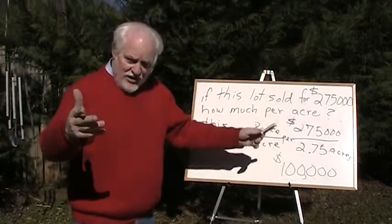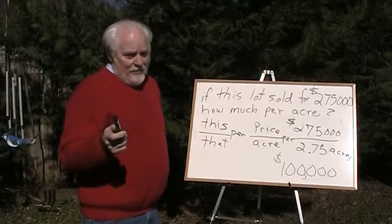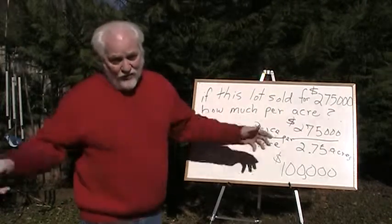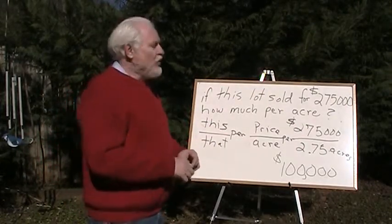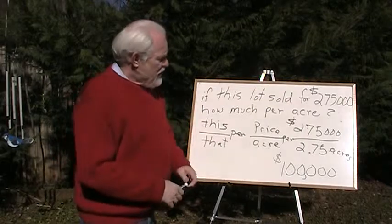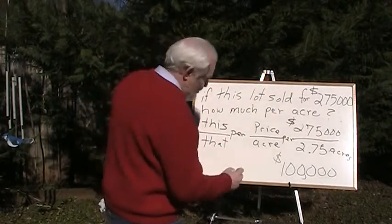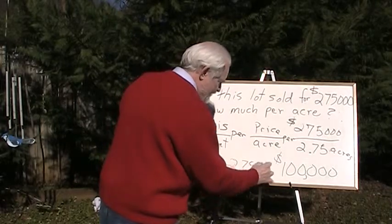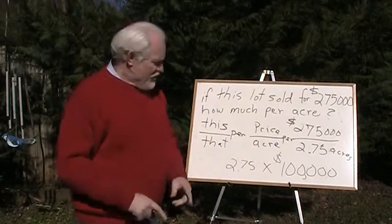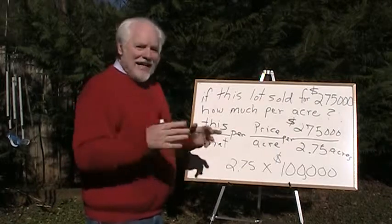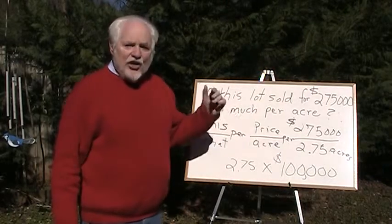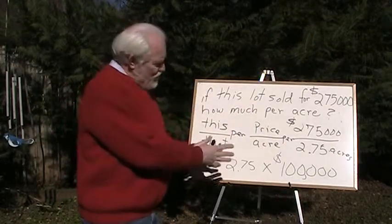By the way, if you go take the exam and don't pass, it costs $63 to take it a second, third, or fourth time — you don't want that. Remember what your teacher told you: check your work. If it's $100,000 per acre, we can verify by multiplying 2.75 times $100,000, which gives us $275,000. Check your work — sometimes you make a foolish mistake that would be obvious if you checked.